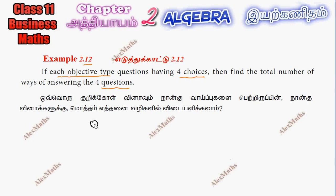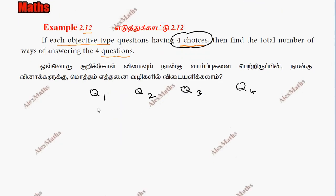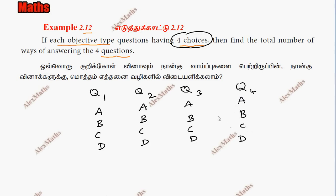So, question 1, question 2, question 3, and question 4 — each has 4 choices. Suppose question 1 has options A, B, C, D. Similarly, each question has 4 choices A, B, C, D. How many ways can they be answered?